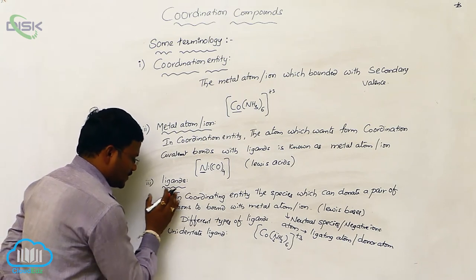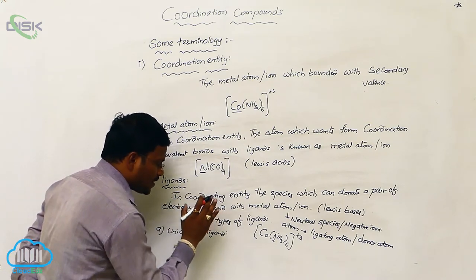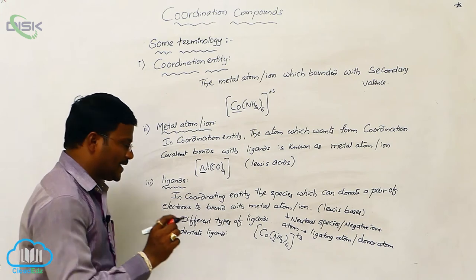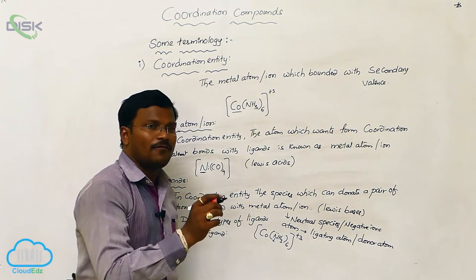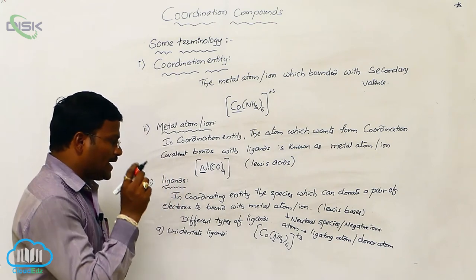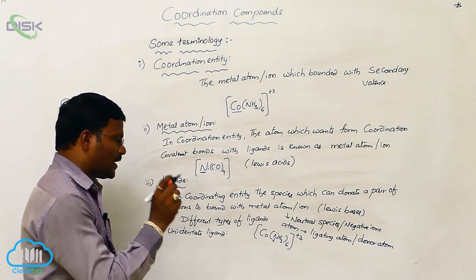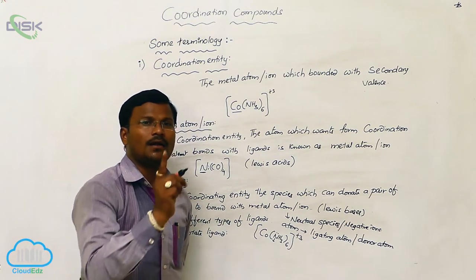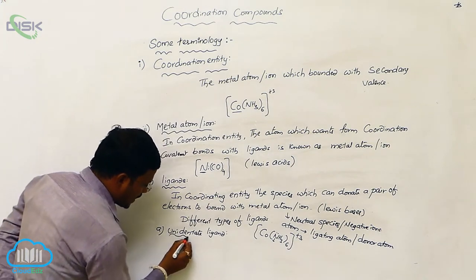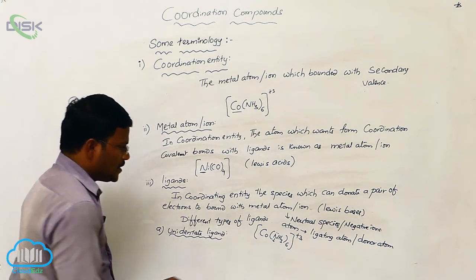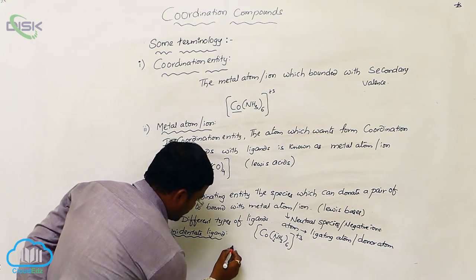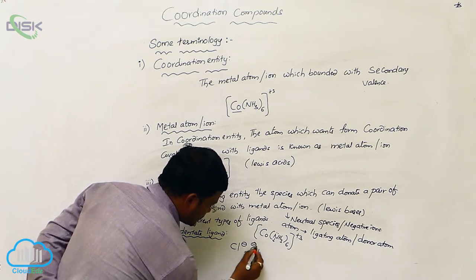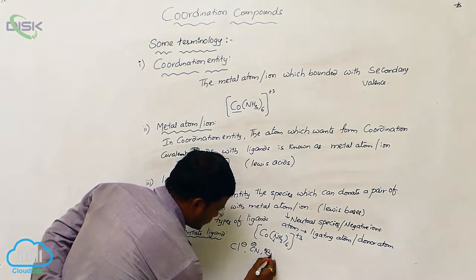Let us continue our discussion with ligands. Different types of ligands are possible. The first one is unidentate ligands. In a given ligand, only one atom can donate a non-bonding pair of electrons to form a coordination covalent bond with a metal atom or metal ion. Such ligands are called unidentate ligands. Examples include Cl⁻, CN⁻, Br⁻, etc.